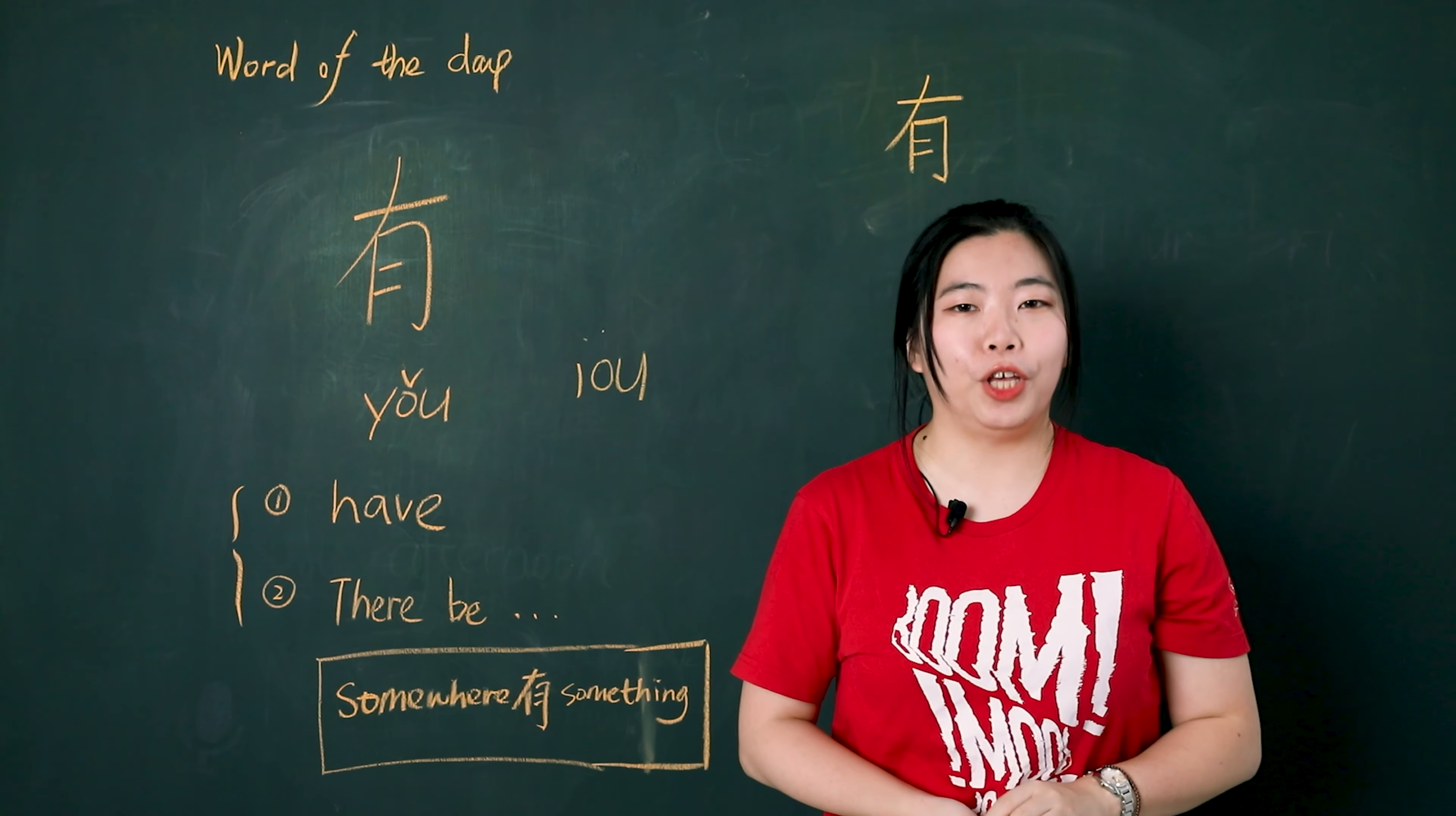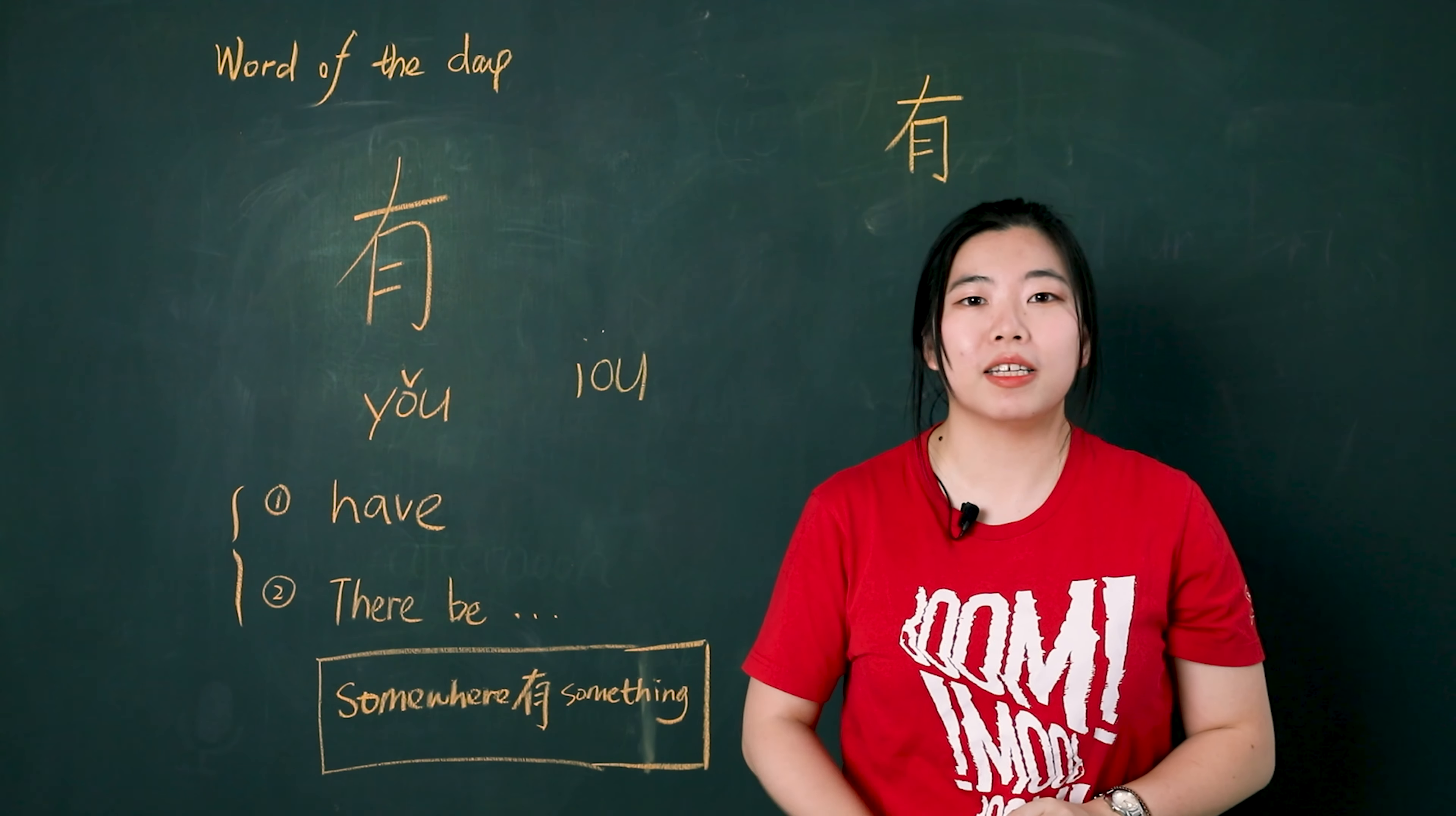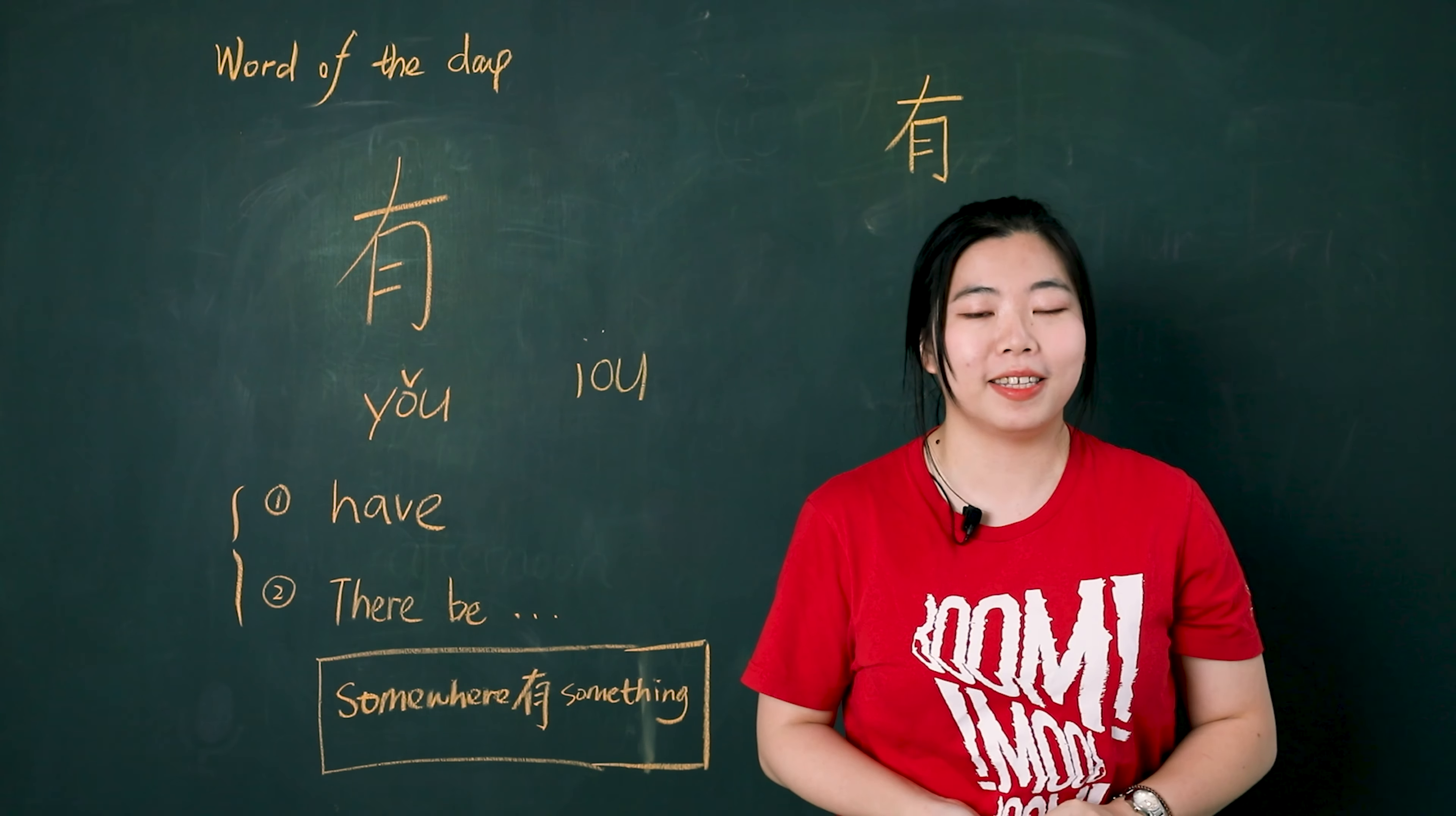The second meaning of 有 is a sentence pattern. It means somewhere 有 something. It's a there be sentence.